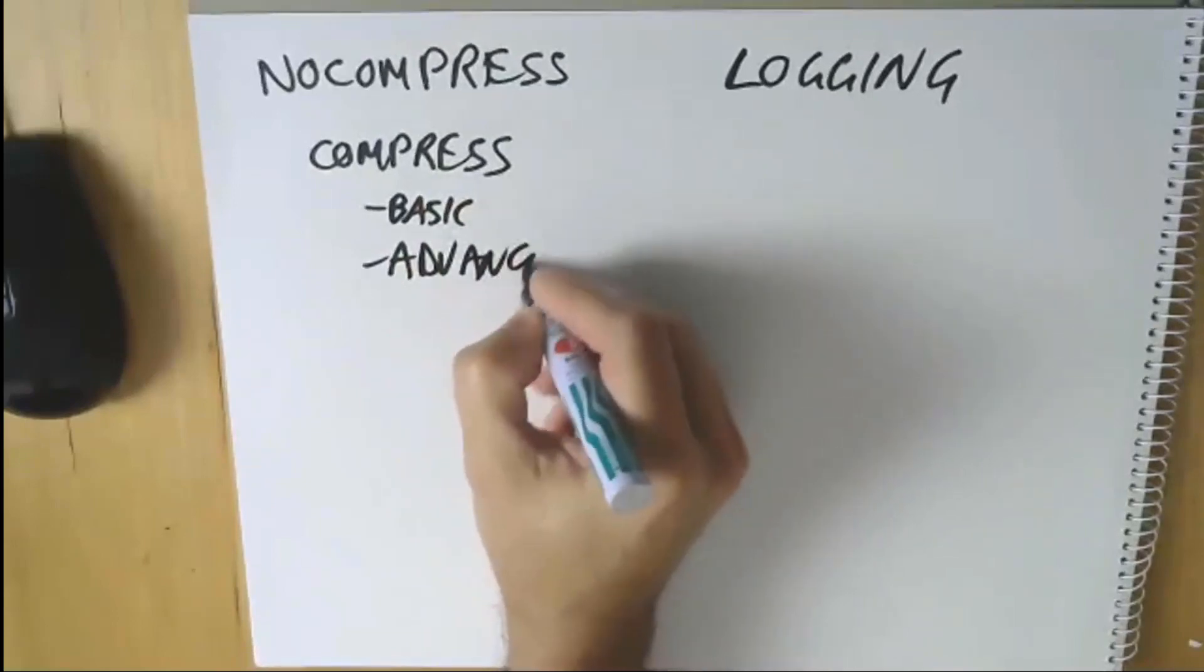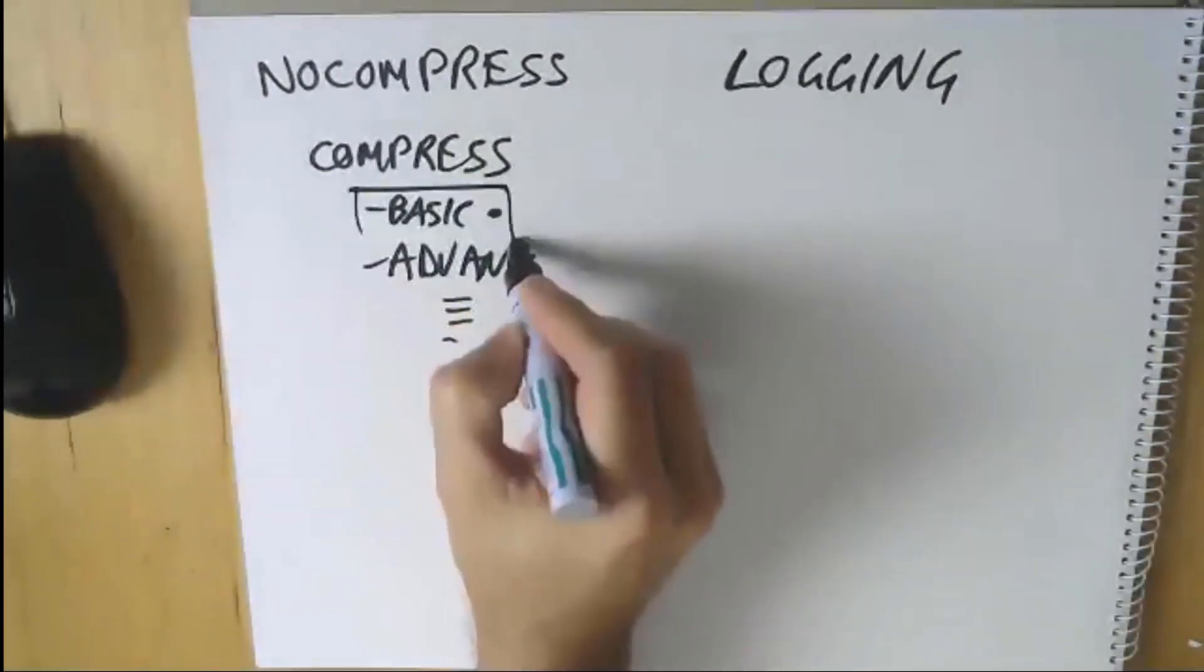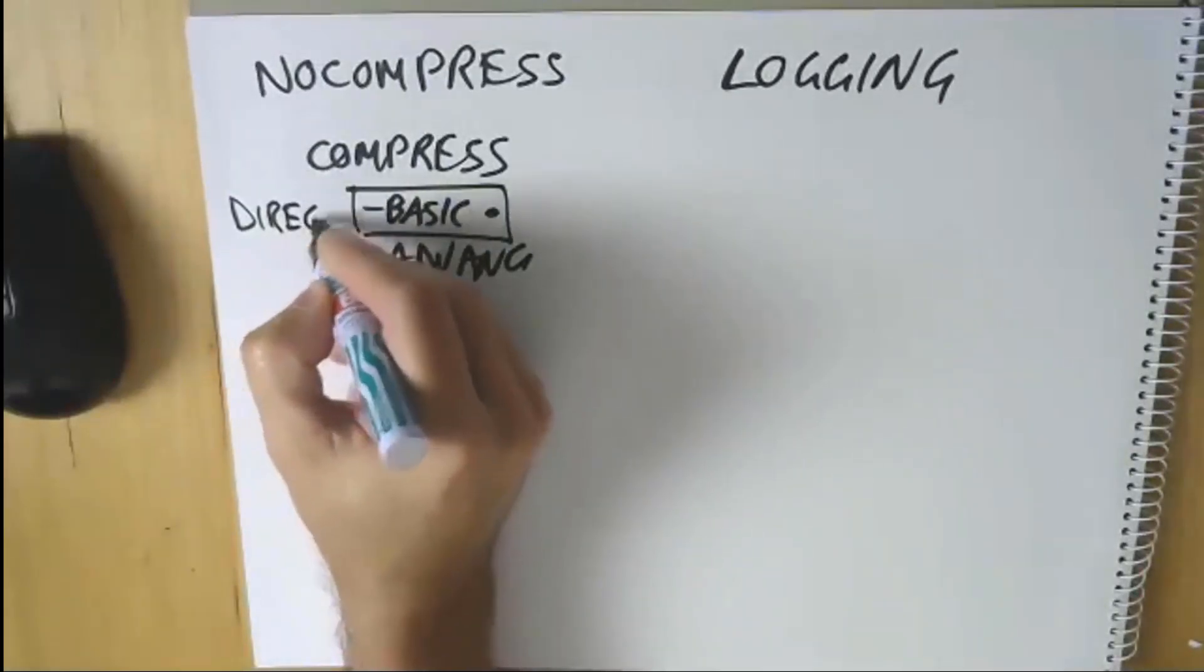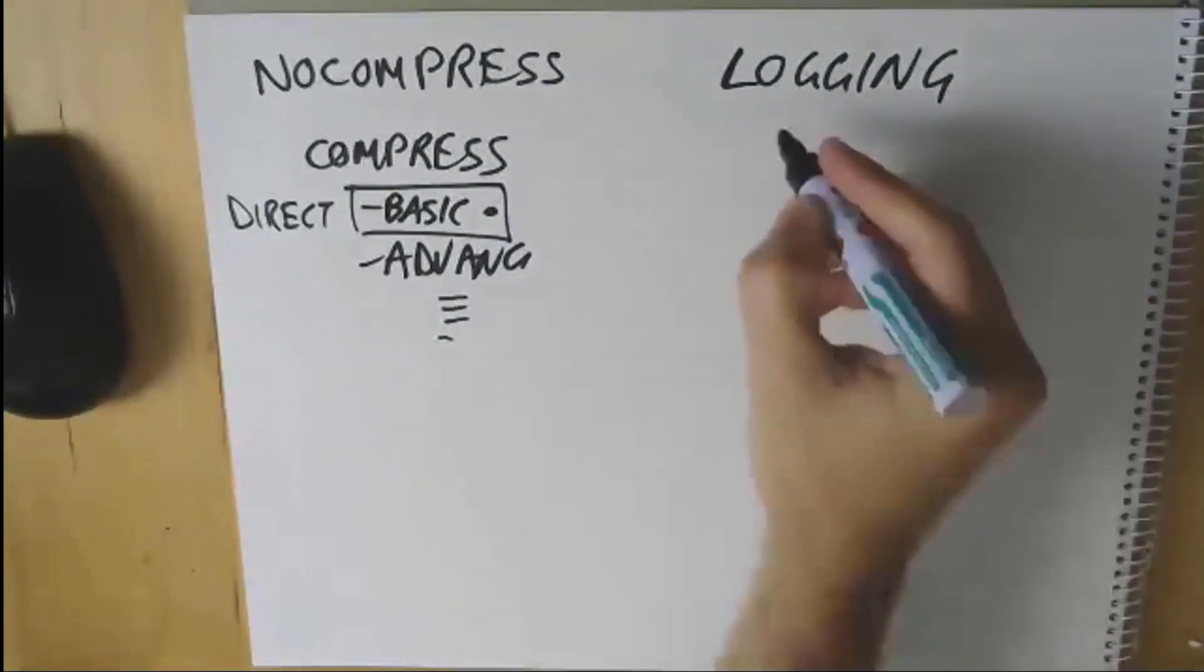We have basic level compression and we have advanced level compression, and under advanced there are various permutations. The basic one is free, part of Enterprise Edition. The cool thing is that works only for direct path loading. That's the key thing I want to speak about here. If you're using compression, don't forget you only get the benefit of compression for direct path loading when you're using the free compression. We have heaps of questions from people saying how come my table isn't being compressed? It's only compressed when you do direct path load or ALTER TABLE MOVE.